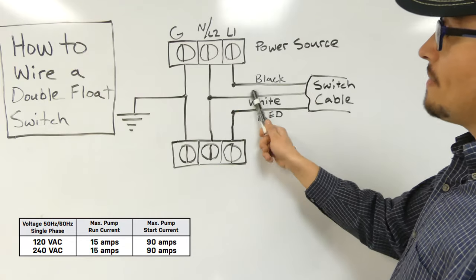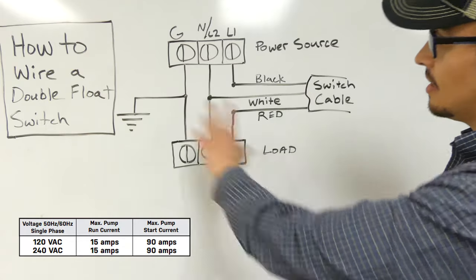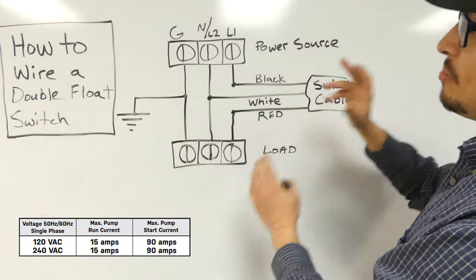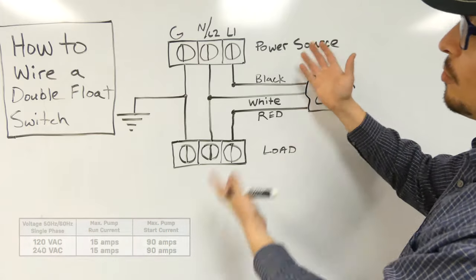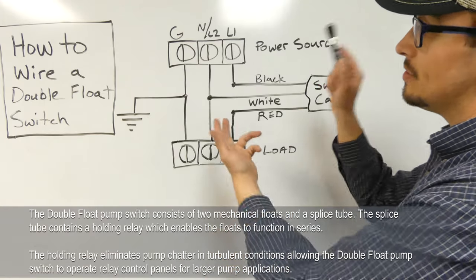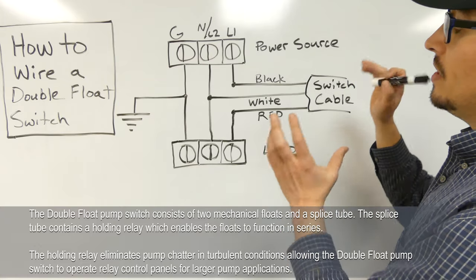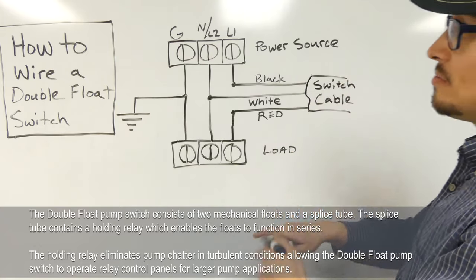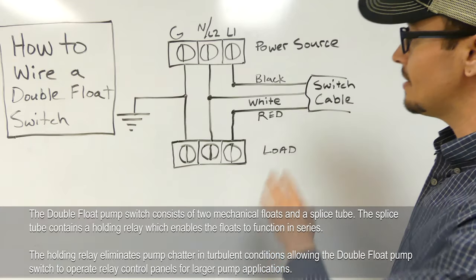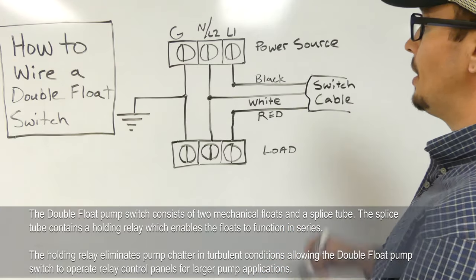But the thing to remember with a double float switch, big warning, double float switches, you have to purchase the one appropriate to the voltage you're using it on. So we sell 120 volt and 240 volt double float switches. You have to buy the right one for the particular voltage you're using or it will not work. And that has to do with the relay that we just talked about.